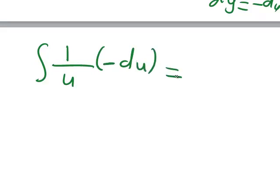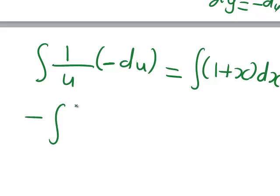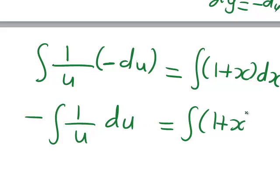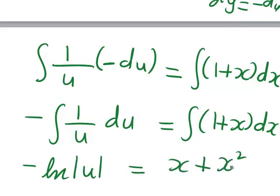On the right-hand side, we still have the integral of (1 plus x) dx. That negative can come out the front, giving negative integral of 1 over u du equals integral of (1 plus x) dx. Evaluating both of those: negative ln|u| equals x plus x²/2 plus c.